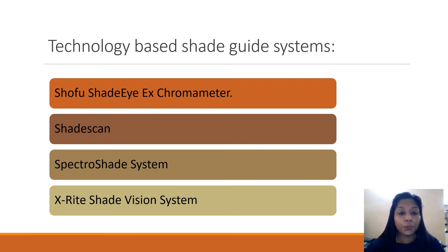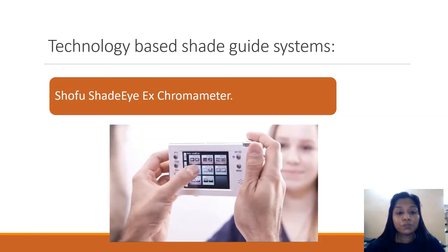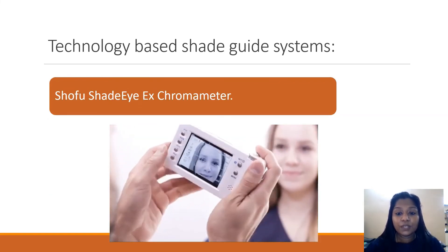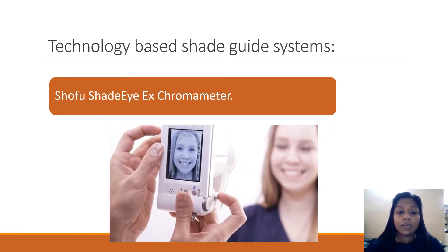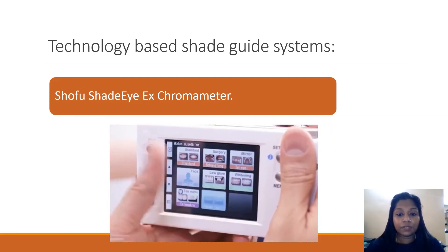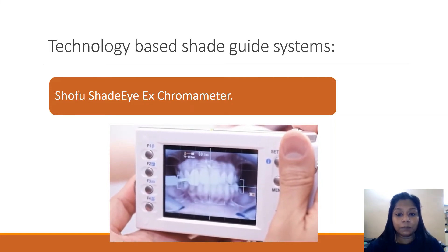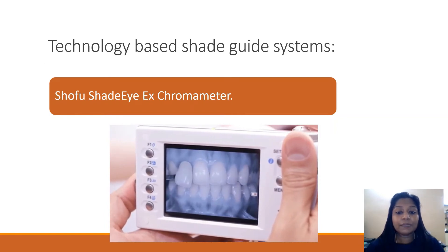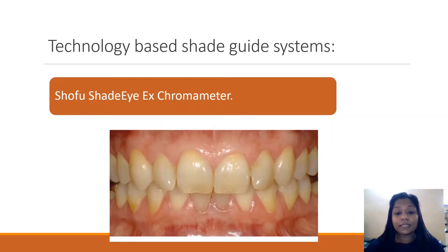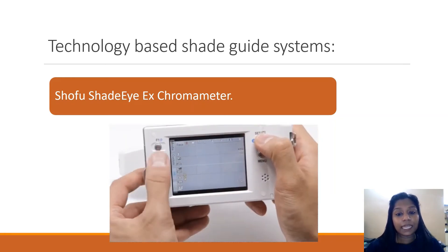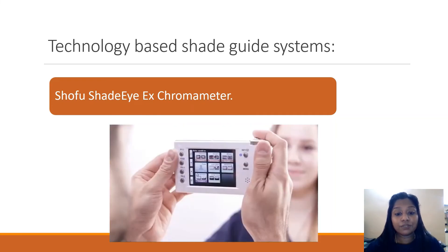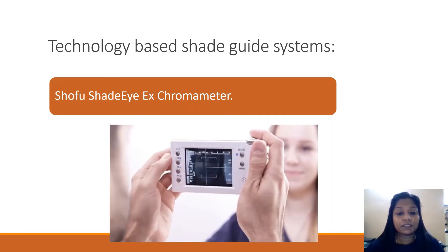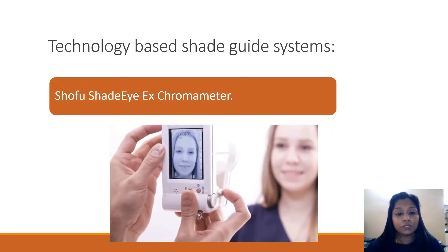Four examples of technology-based systems are given. The first is the Shofu Shade Eye X Chromometer, where an image is captured through the system like a photograph, along with a shade tab, and is directly communicated to the laboratory technician. Nowadays, even DSLR cameras are used by dentists to capture images, which are then transferred to the dental technician so that hue, chroma, and value of the shade can be noted.